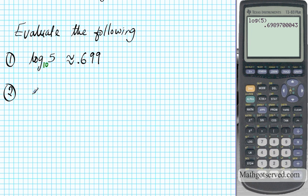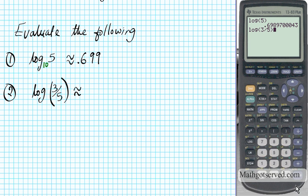Number 2: what if you're asked to evaluate the common logarithm of 3 over 5? All you do in your calculator is enter log of 3 divided by 5, and it's approximately negative 0.2218 to 4 decimal places. The base here is a common logarithm, so it's base 10.